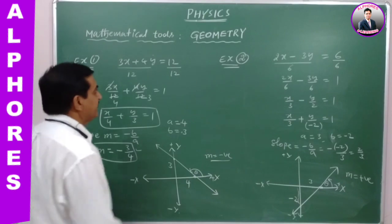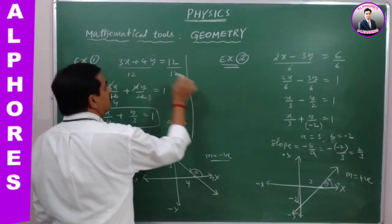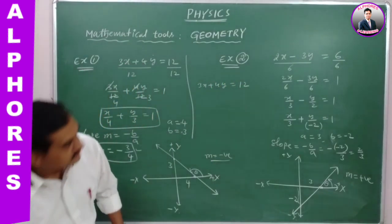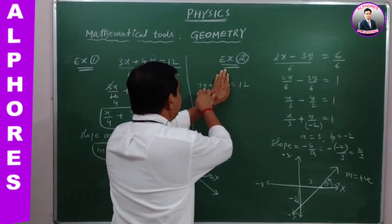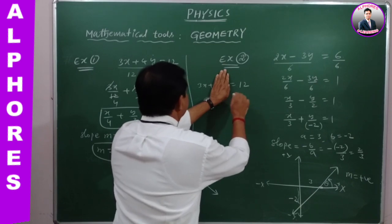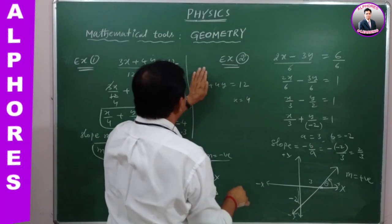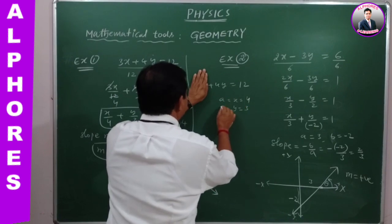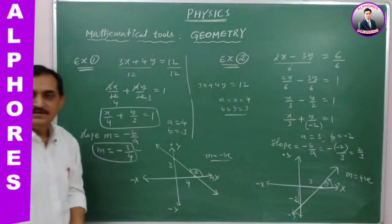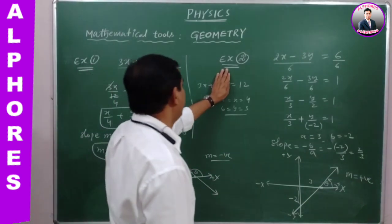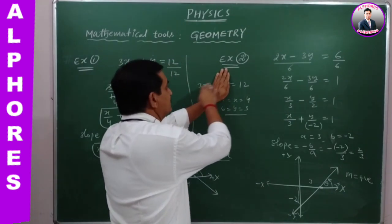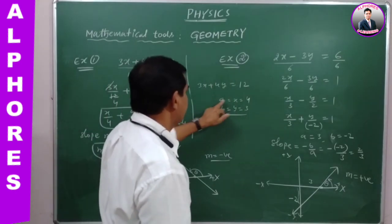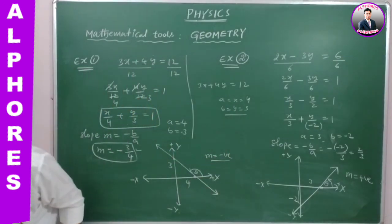One more method to directly find X and Y intercepts: for 3X plus 4Y equals 12, close the Y term — set Y to 0 — then 3X equals 12, giving X intercept equal to 4. Close the X term — set X to 0 — and Y intercept equals 3. So A equals 4 and B equals 3 directly, by substituting zero for the other variable.